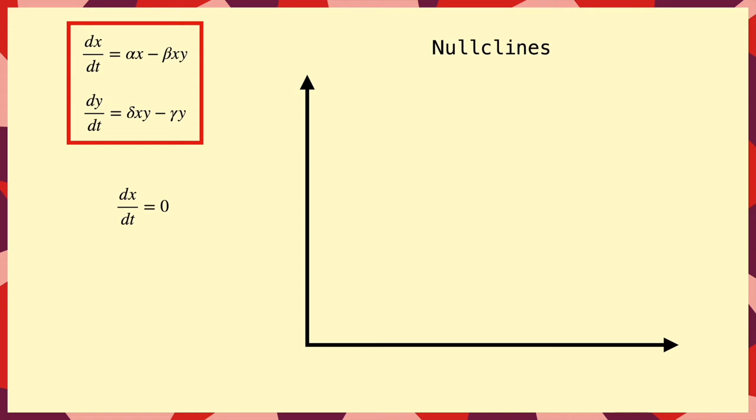So, if we were to solve dx by dt equals 0, that is, saying that alpha x minus beta xy is 0, and for this to be the case, either x is 0, or y equals alpha over beta. And these two lines are our x-nullclines.